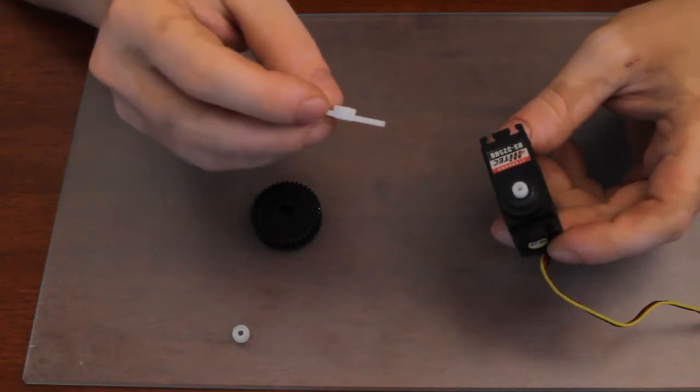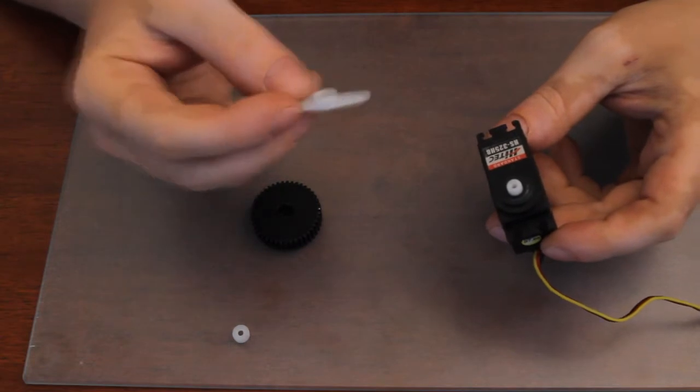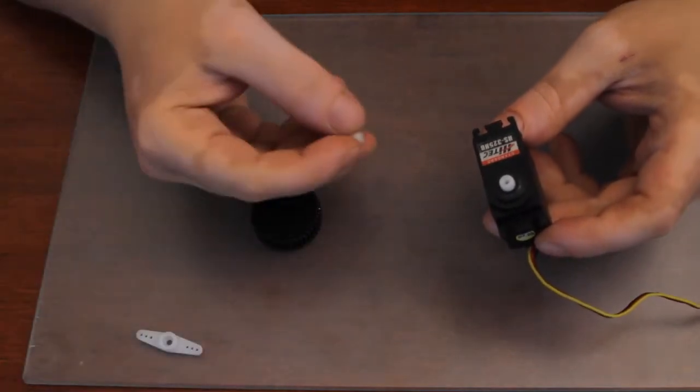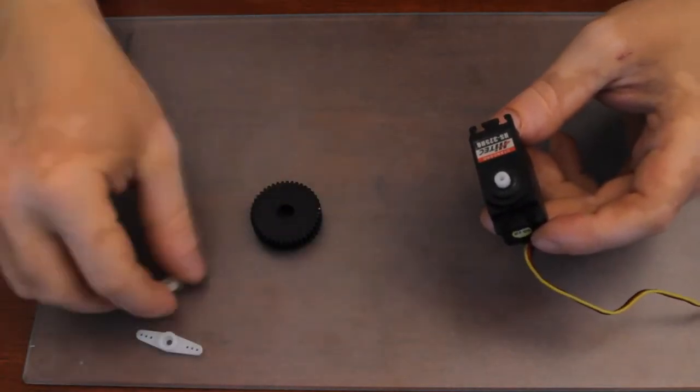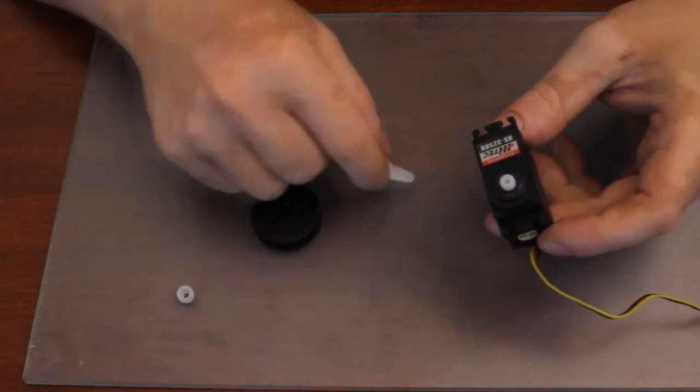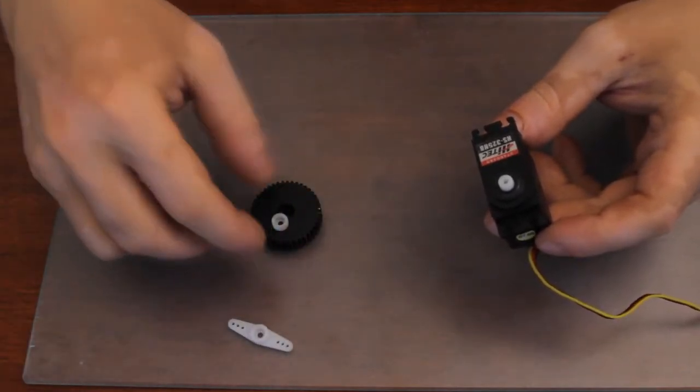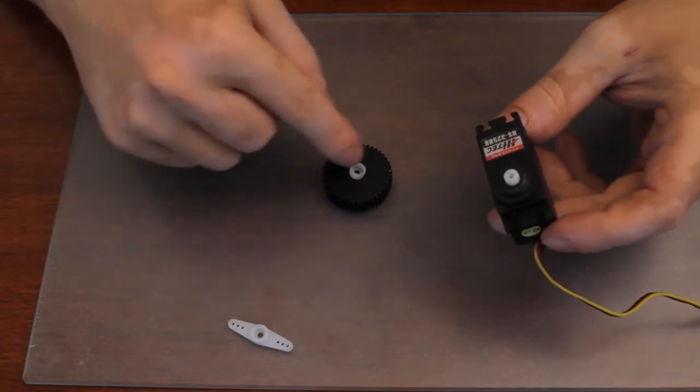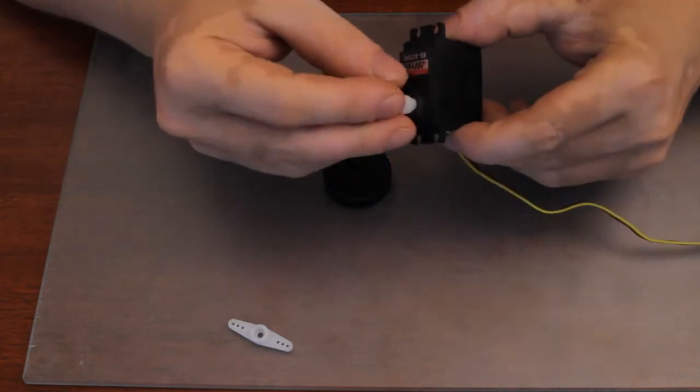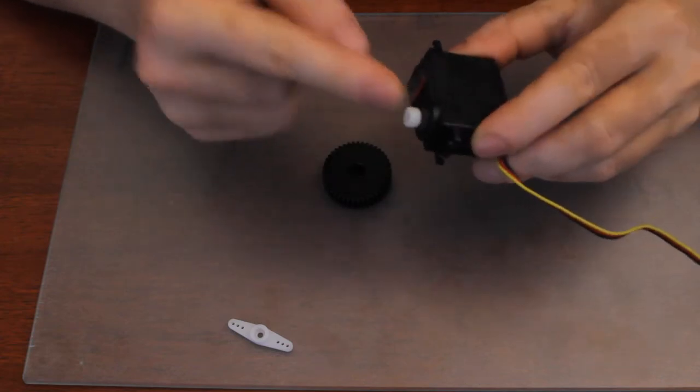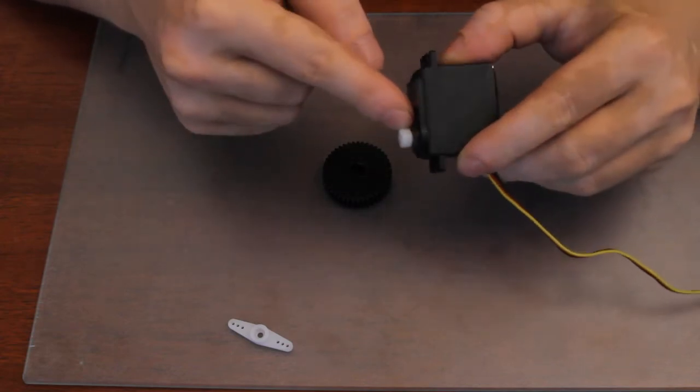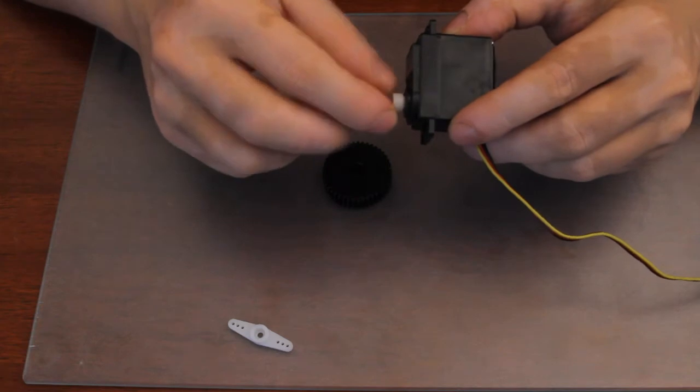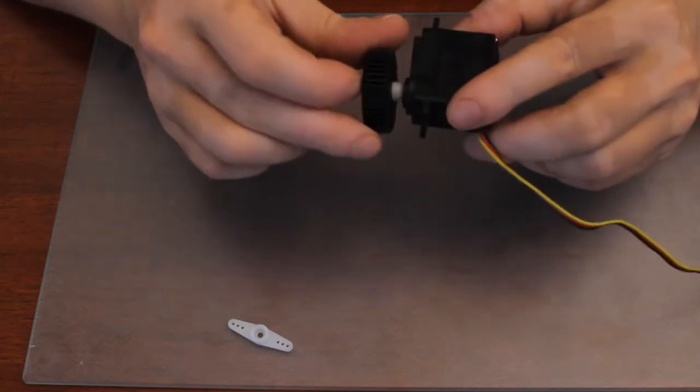Here I have a servo connector which I changed into this. I cut off the wings and that part at the end should fit into the gear and into the servo because it's an original part from the servo it fits perfectly. It just has to fit into the gear.